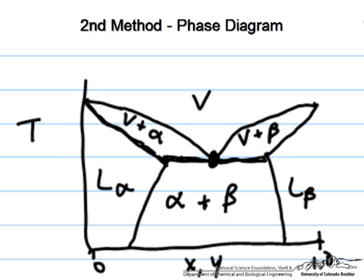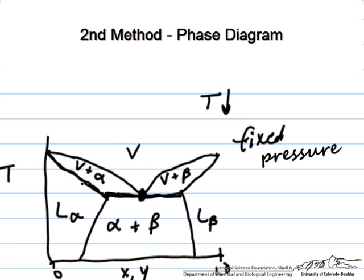Recall that this phase diagram is at a fixed pressure, so there is only one and only one temperature, as we have just said, that is at 50 degrees C at this pressure, at which we will have the three phases corresponding to that line.